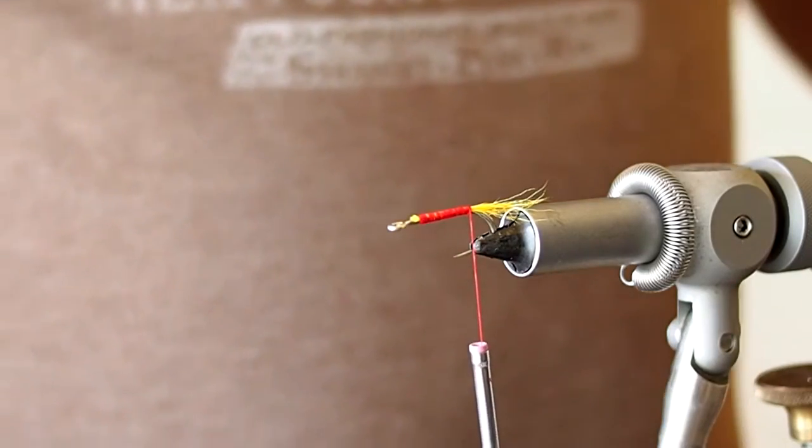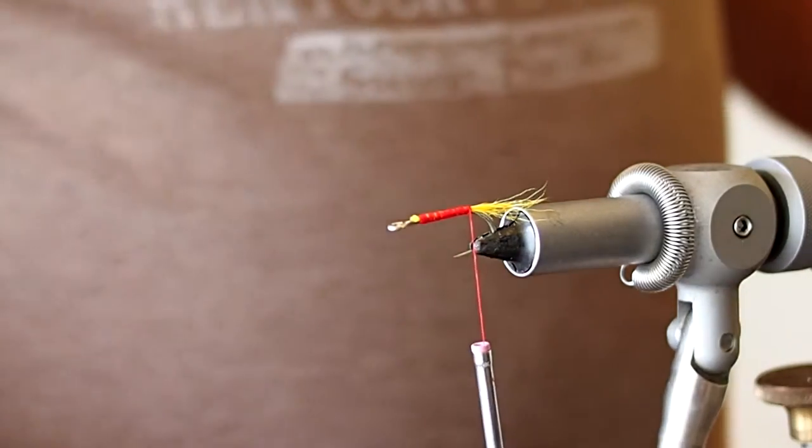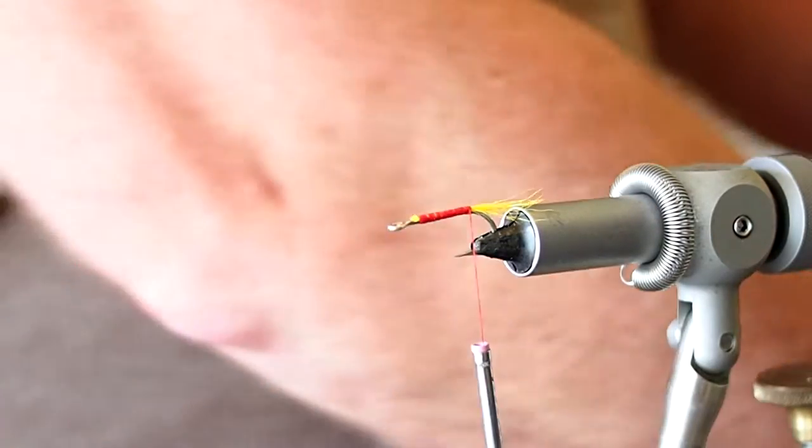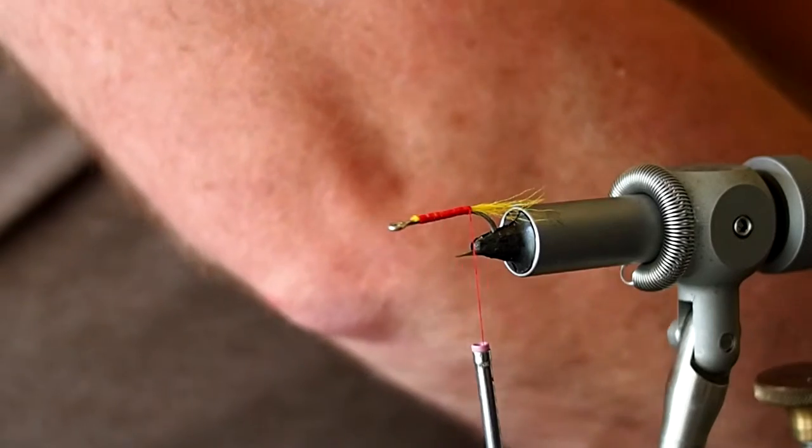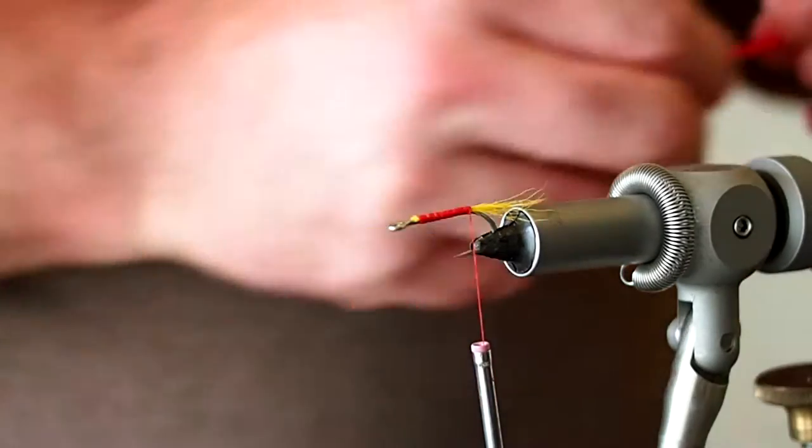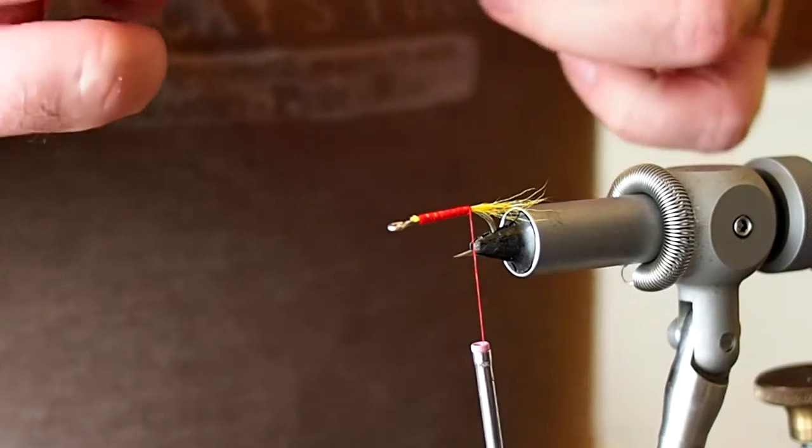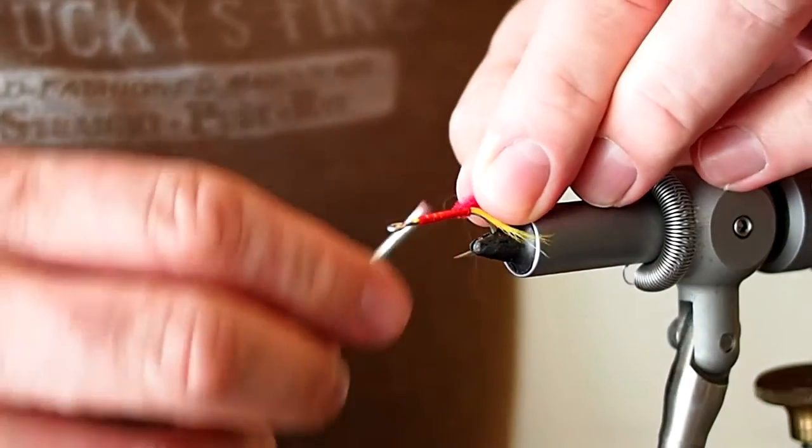This fly calls for a red chenille butt. So I'm going to cut off a section of red chenille. This is red ultra chenille. And tie that in at the butt of the fly.